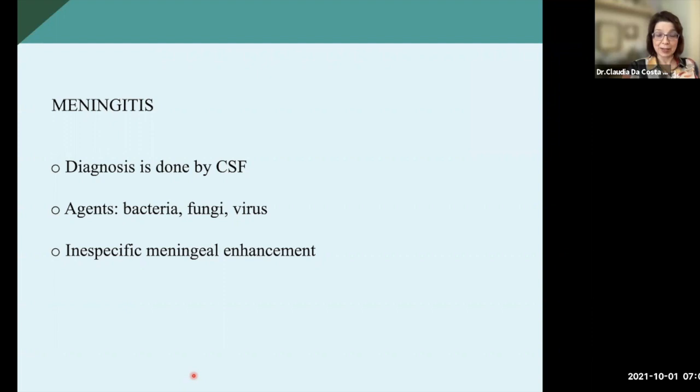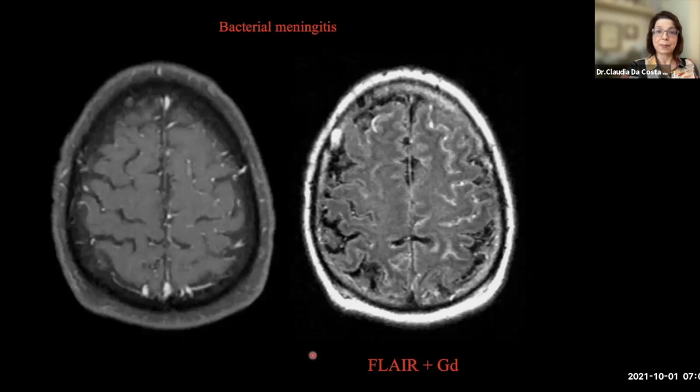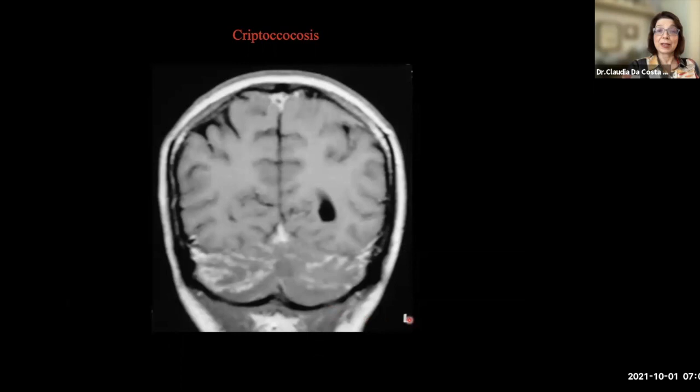On the first case, on the left we have the enhanced T1-weighted image — we can suspect some enhancement in the sulci, but if we use the enhanced FLAIR, we can see the meningeal compromise much better. As I said, it's completely nonspecific. This is a fungus, the cryptococcus, and the cryptococcus can cause a meningitis that's easily diagnosed by CSF with China ink staining.